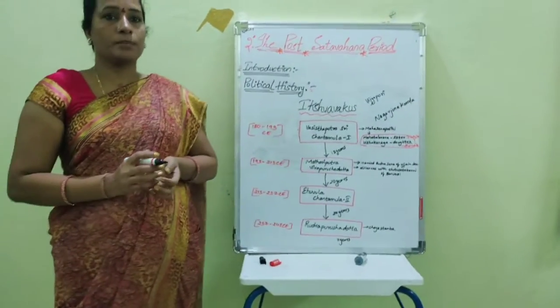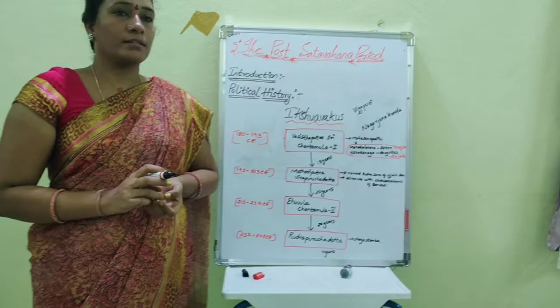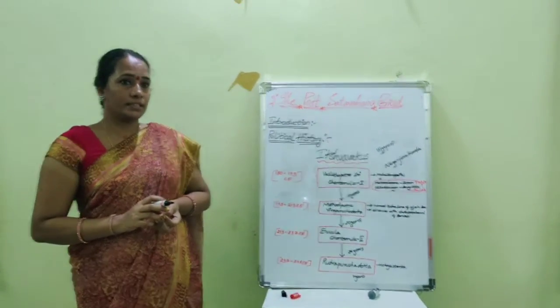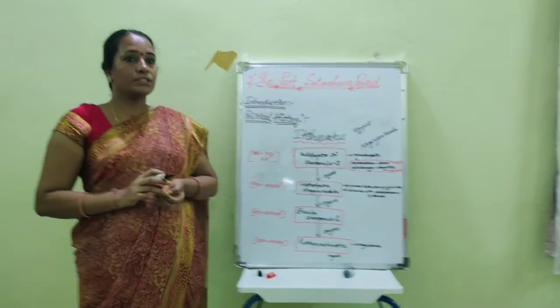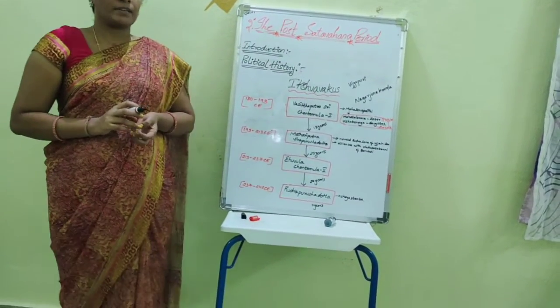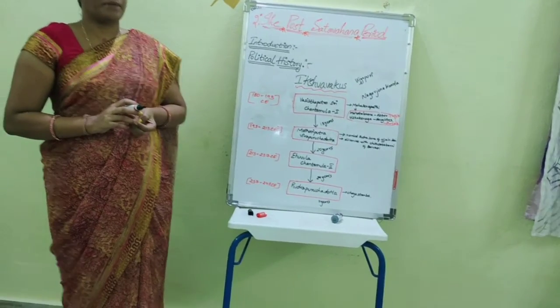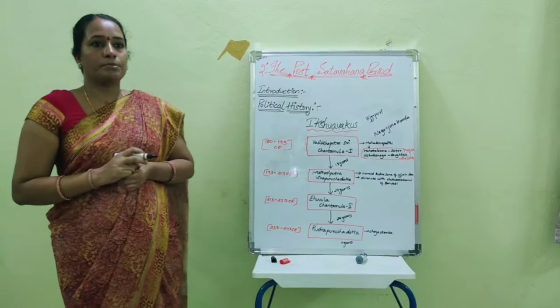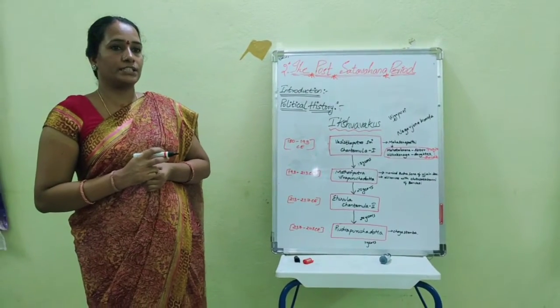Same as Shantamula I, Veera Purushadatta also made marriage alliances with other kingdoms by marrying the daughter of the Shaka king Surudra Sena of Ujjain. He made his daughter marry the prince Chhatu Chatakarni of Banawasi, which made him politically stable.